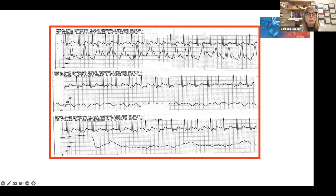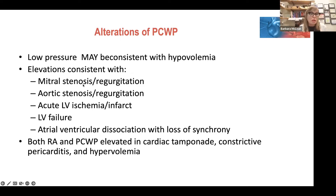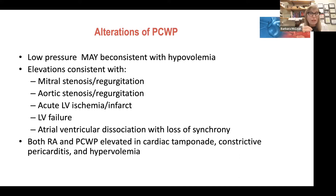On insertion of the PA catheter, record all pressures as the catheter advances. Know that PA diastolic should be five or less higher than wedge pressure. If PAD is five or less higher than wedge, you can use PAD to reflect the left heart instead of inflating the balloon. If PAD is significantly more than five higher than wedge — as occurs in pulmonary hypertension with normal LV filling — you cannot use PAD to reflect left ventricular filling. The gradient between PAD and wedge pressure is profoundly important in how we evaluate our patients.